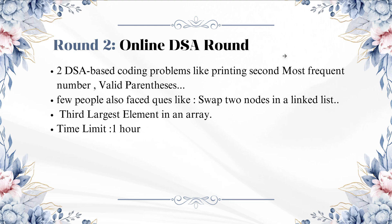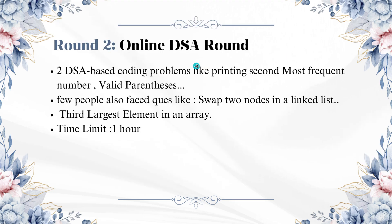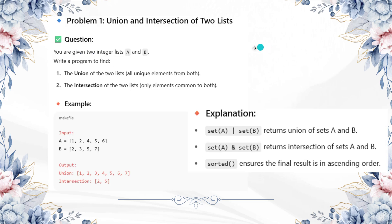One of the questions given in round two — from information I received from students — is union and intersection of two lists. You are given two integer lists A and B, and you must write a program to find the union of two lists (all unique elements from both) and the intersection of two lists (only elements common to both).